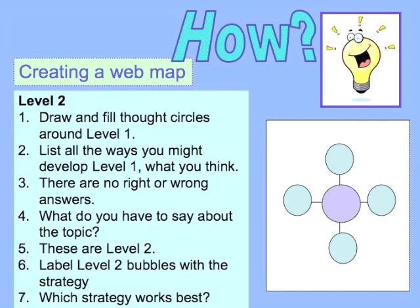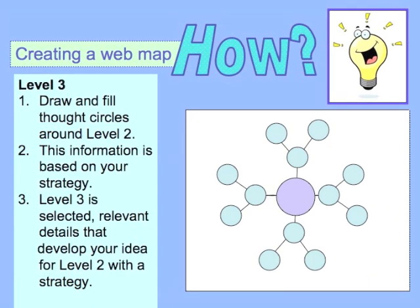Now for level two. Draw and fill thought circles around level one. List all the ways that you might develop level one — what you think. There are no right or wrong answers. What do you have to say about the topic? These are level two. Label your level two thought bubbles with strategies that seem to go best with that particular idea. Which strategies work best?